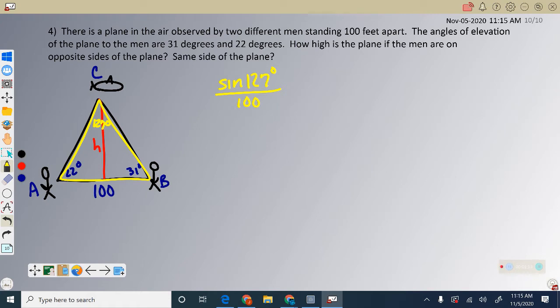What we need to do is find either side A or side B. It doesn't matter which one, it'll work out the same either way. Let's find side A. Angle A is 22 degrees. When I cross multiply, A sine 127 degrees equals 100 sine of 22.